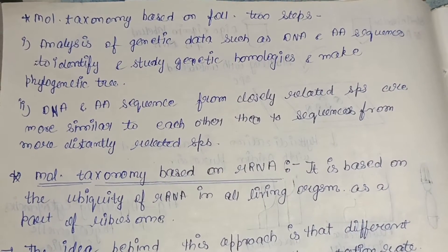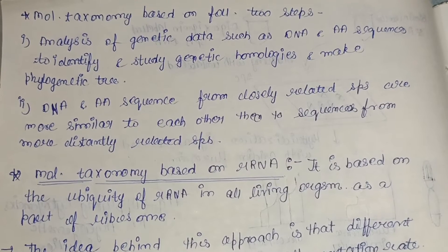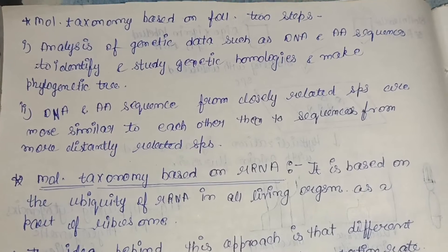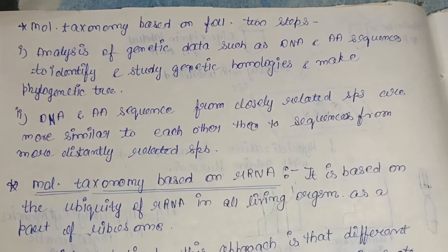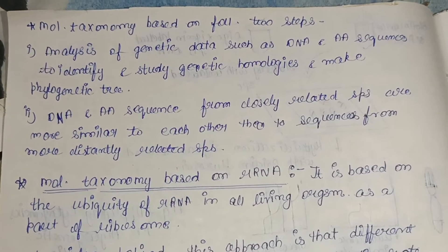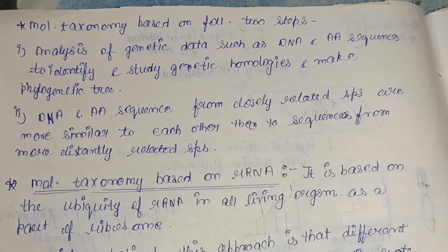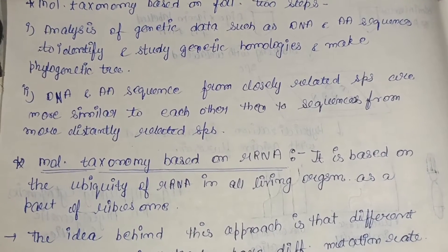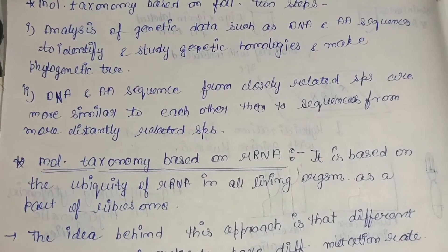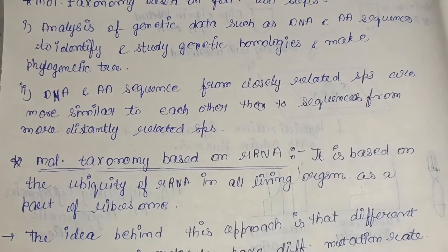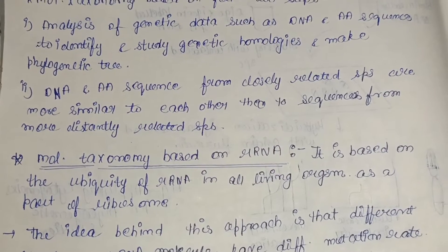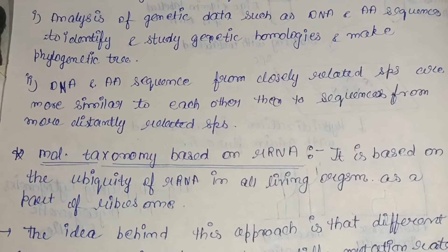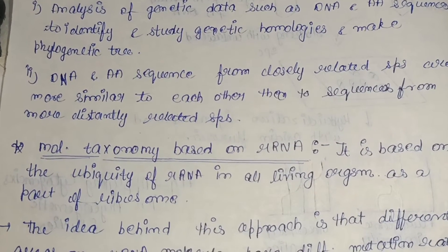The analysis identifies genetic homologies — similarities — and is used to make the phylogenetic tree. A phylogenetic tree, also known as phylogeny, is a diagram that depicts the line of evolutionary descent of different species, organisms, or genes from a common ancestor. DNA and amino acid sequences from closely related species are more similar to each other than to sequences from more distantly related species.